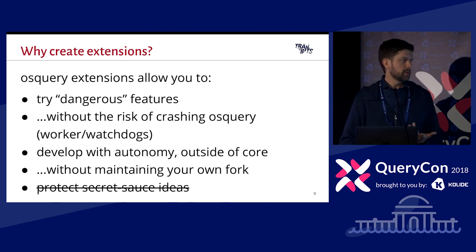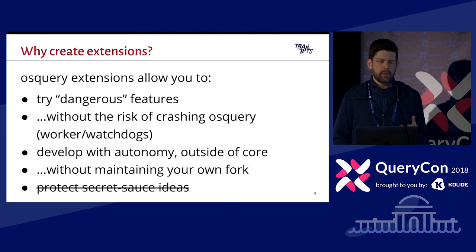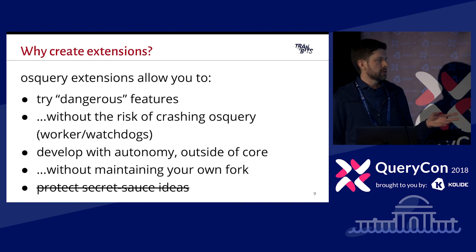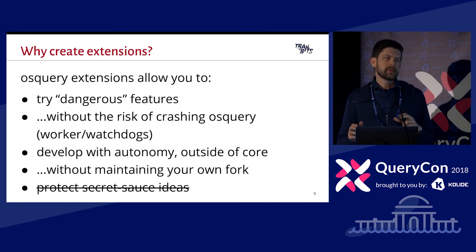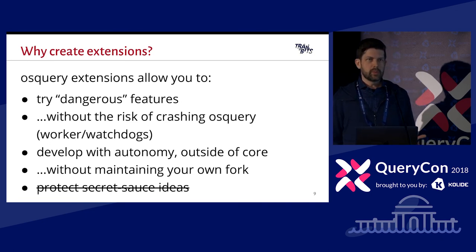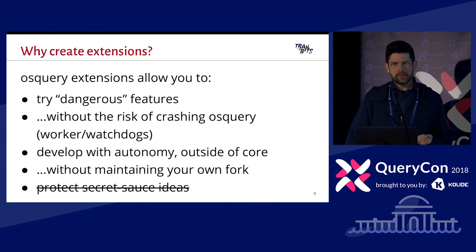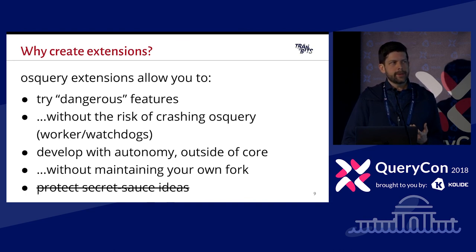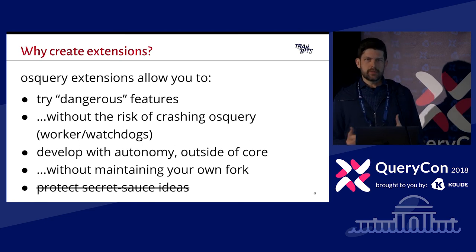What can we do in extensions? We can implement 'dangerous' features — things that might be out of the ordinary or that wouldn't be accepted upstream. We can try them without crashing OSQuery main, and we're under less watchdog pressure, so if things take a little longer or use more resources, we won't get automatically penalized. We can develop with autonomy, without seeking approval or worrying about how long upstreaming takes.